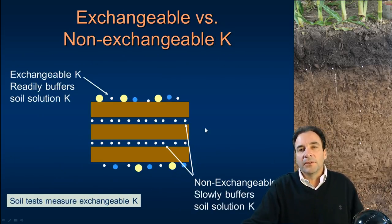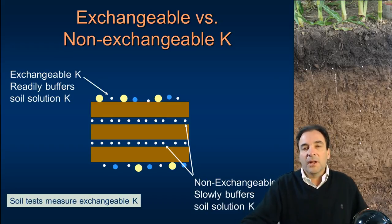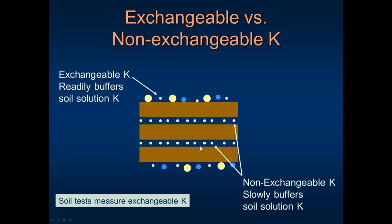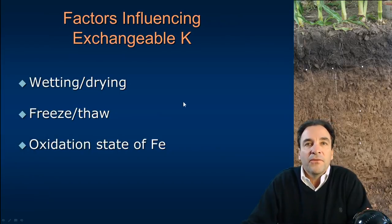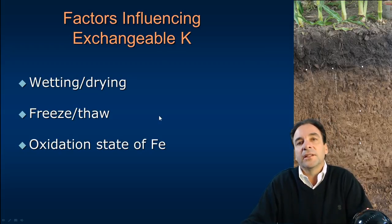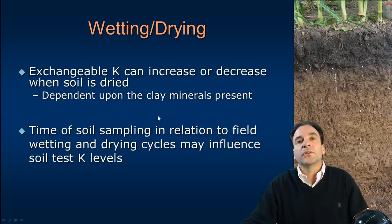This graphical representation shows how soil potassium interacts with soil clay particles. Clay particles are layers of minerals — those layers on the outside, on the cation exchange sites, are readily available to come into solution and be utilized by plants. The non-exchangeable or slowly released buffer potassium is contained within the clay particles. Soil tests measure the amount of exchangeable potassium, as well as potassium dissolved and readily available in the soil solution. Factors that influence exchangeable or readily available potassium include wetting and drying cycles, freezing and thawing cycles, and the oxidation state or iron content of our soils.